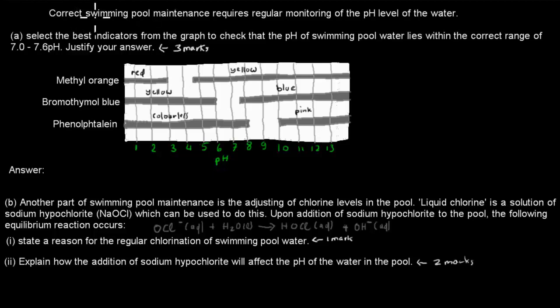The question says, correct swimming pool maintenance requires regular monitoring of the pH level of the water. Question A: select the best indicators from the graph to check that the pH of swimming pool water lies within the range of 7.0 to 7.6 pH. Justify your answer. That's worth three marks. This is the actual graph. The lines don't look straight, but they're meant to be straight. So methyl orange, bromothymol blue, phenolphthalein. You've got pH 1 through 13, and the range is here. And the colors are changed on the other parts of that range.